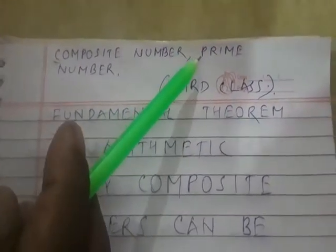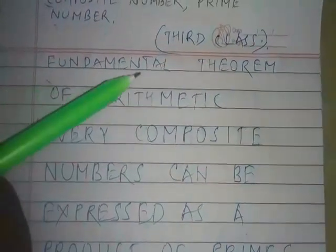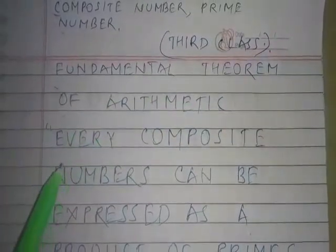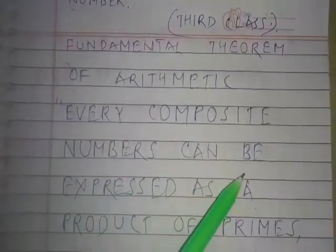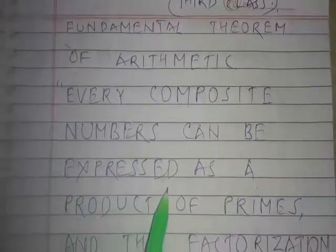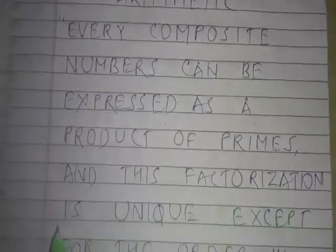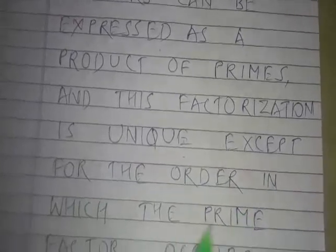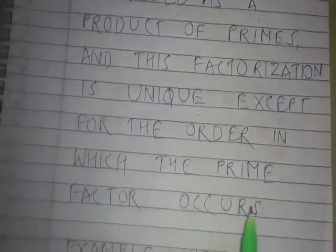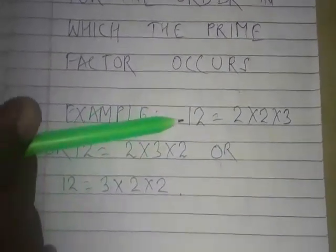Two has two factors: one and two. Now, what is the Fundamental Theorem of Arithmetic? Every composite number can be expressed as a product of primes, and this factorization is unique except for the order in which the prime factors occur. An example is given: we take the number 12.